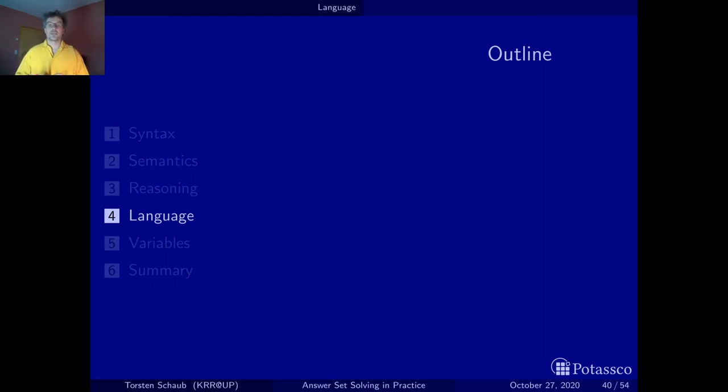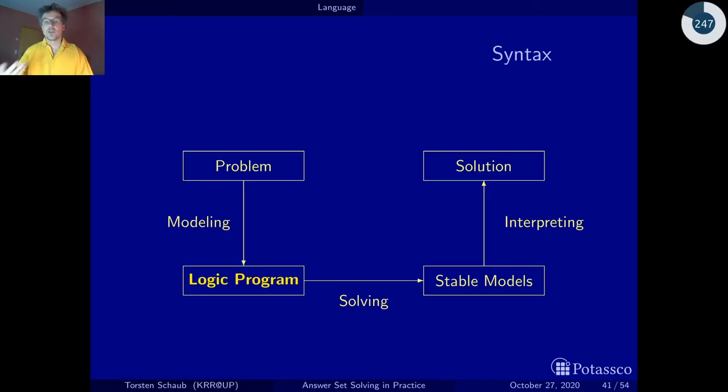While we have already looked at the syntax of normal logic programming rules in section 1, when we looked at the mathematical core of ASP's language, we now want to look at what the modeling language of real ASP systems have to offer beyond that. After having looked at the semantics and stable model definition, we come back to syntax now from a more practical point of view. How can we actually model actual problems?